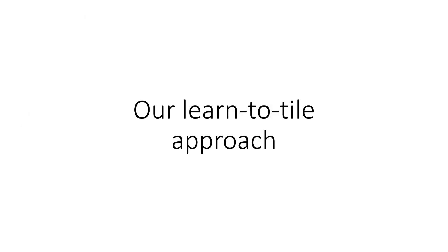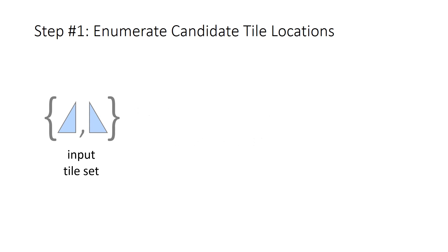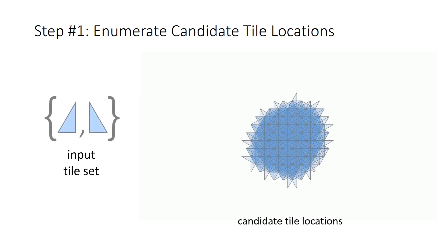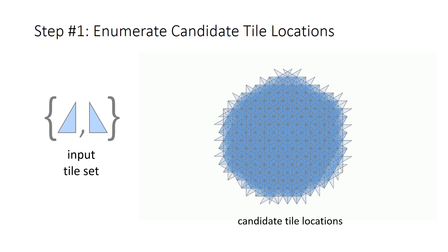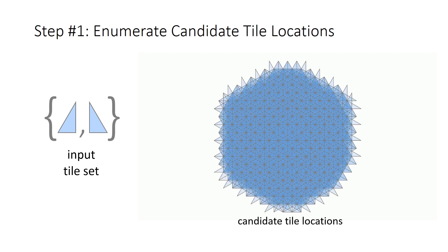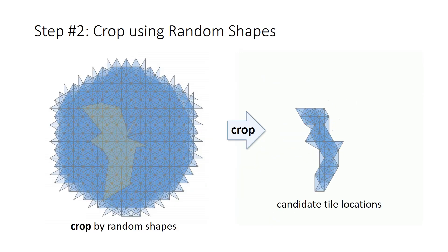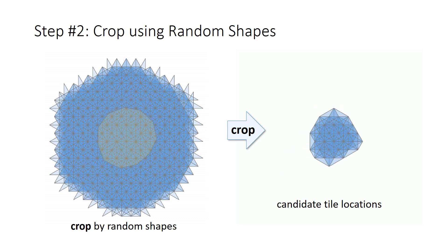Our learn-to-tile approach: Given an input tileset, we first enumerate candidate tile locations. Then, we generate random shapes to crop and locate candidate tile locations.